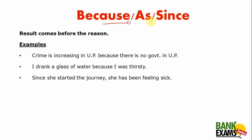These three words — because, as, and since — are used when the result comes before the reason. As we all know, because, as, and since represent the result. When we are stating a result in a sentence, these three words are used.